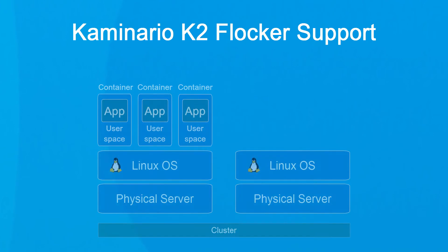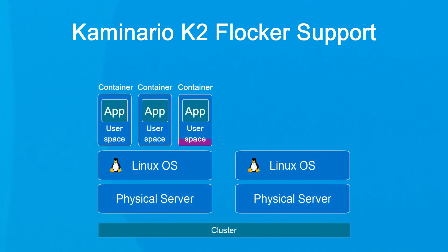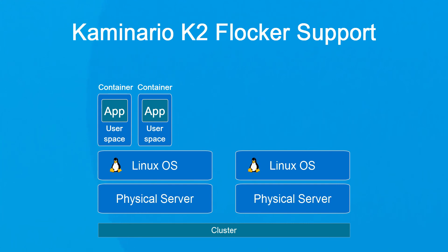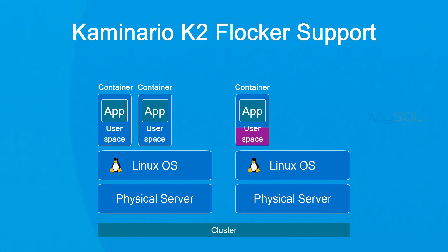As Docker images contain everything needed for them to run, they tend to be stateless, which means that when the container dies, all changes inside the container are lost. For some applications, this is not a problem — start your container again wherever you wish, and it will do the same job it did before. But what happens when you want to keep changes inside the container for the longer term, or alternatively, make them persistent?